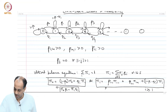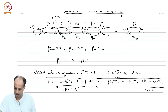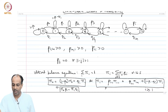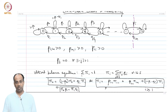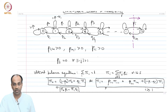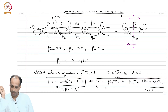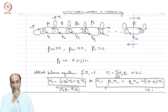This has a nice interpretation. If you look at any two states i and i+1, pi_i * P_i is the rate of transitions forward, and pi_{i+1} * Q_{i+1} is the rate of transitions backward. So this equation is simply saying that for any two adjacent states i and i+1, the rate of forward transition equals the rate of backward transition.